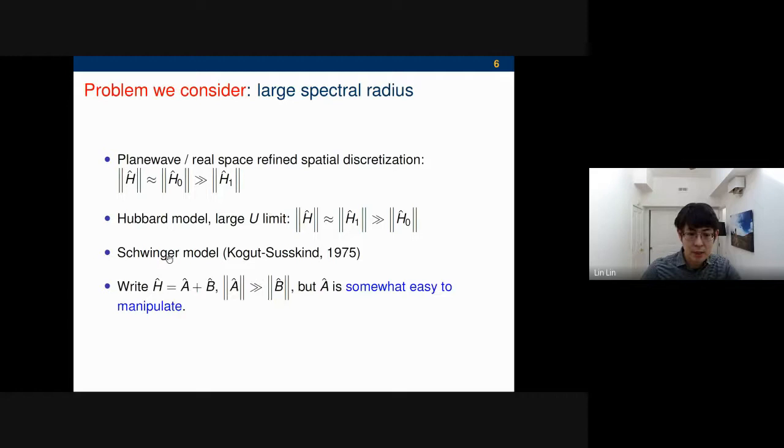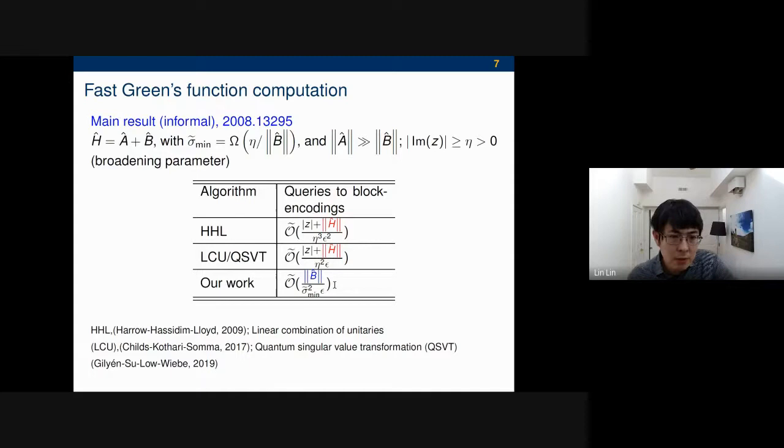In general, what we're going to think about is the Hamiltonian can be separated into two parts, A plus B. The spectral radius of A is much larger than B. If we just stopped here, we wouldn't be able to do anything. But the point is that A is somewhat easy to manipulate so that you can get access to a much more efficient way of expressing the block encoding of some functions of A. So this is really the key.